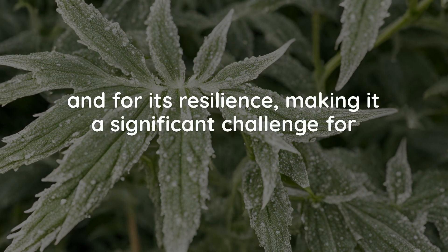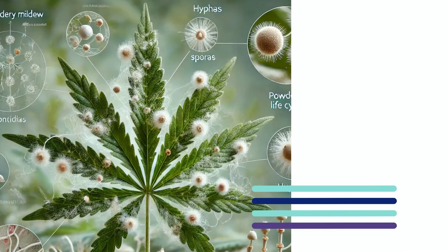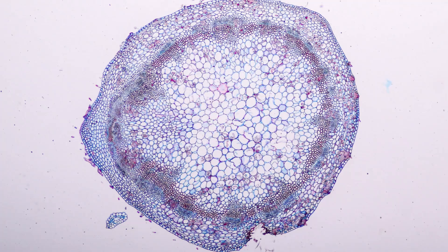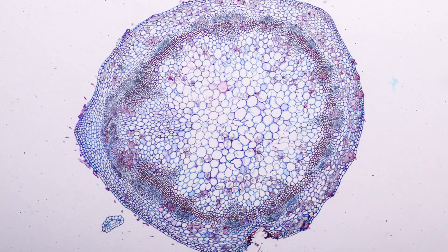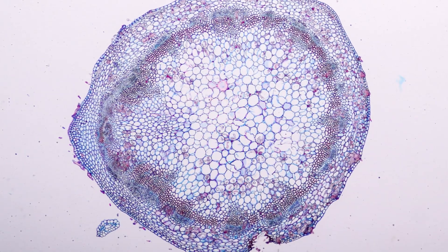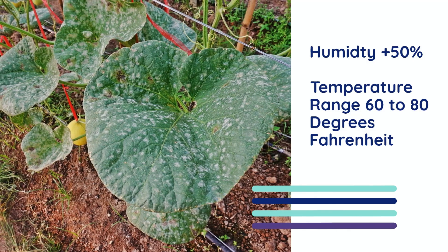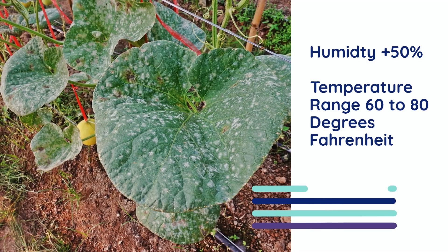The life cycle for this disease is a continuous process that enables the fungus to infect plants, reproduce, and spread to new hosts. The powdery mildew disease cycle begins when fungal spores, known as conidia, land on the surface of a host plant. These conidia are often carried by air currents, water splashes, tools, and human activity. Once on the plant, the spores germinate if environmental conditions are favorable, typically with humidity above 50% and temperatures ranging between 60 to 80 degrees Fahrenheit.